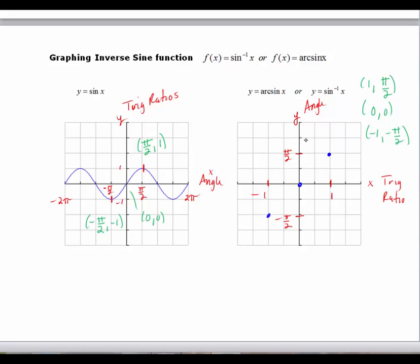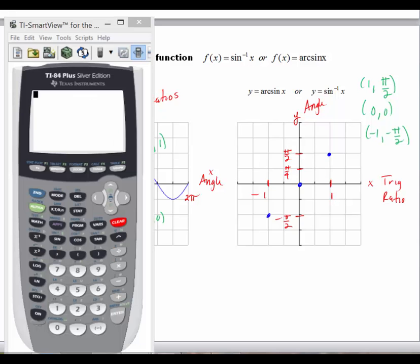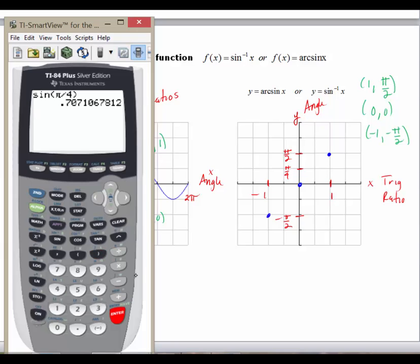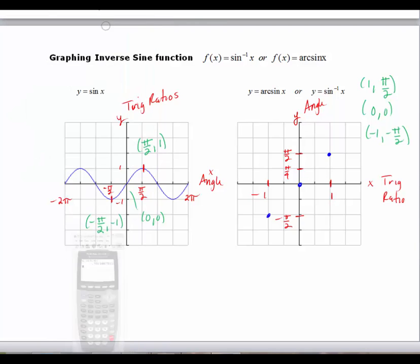What I'm going to do is we're going to look at the value at pi over 4 to give us a better idea. And so the sine of pi over 4, if I want to graph this, the sine of pi over 4, we know it's a square root of 2 over 2, but let's get the decimal value in case you've forgotten that. I'm in radian mode. The sine of pi over 4 is equal to approximately 0.7.